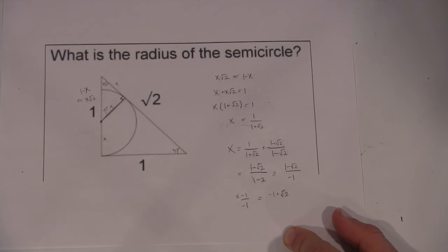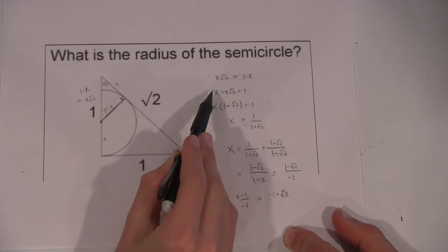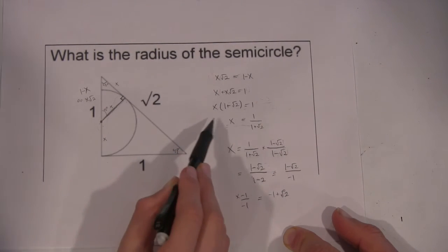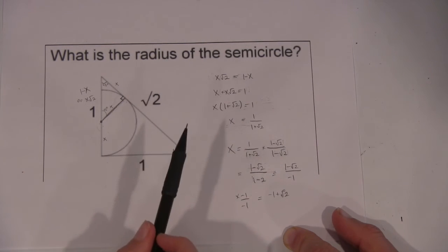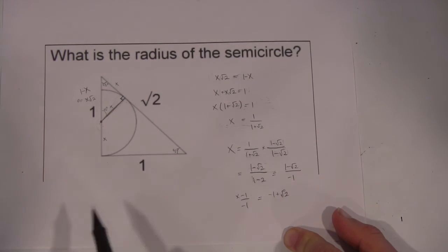So we get x√2 equals 1 minus x, move the x to the other side and factor it out here, and then we're going to divide by 1 plus √2, and we get x equals 1 over 1 plus √2, but we can't leave it like that,